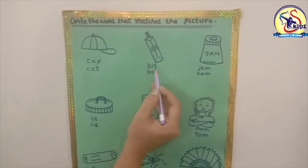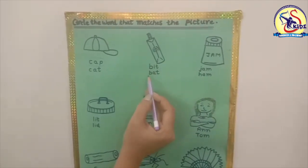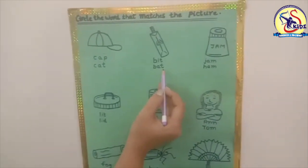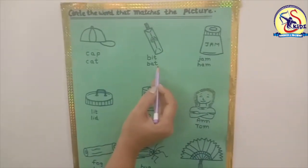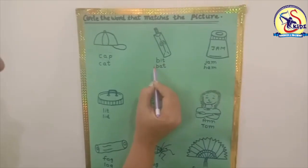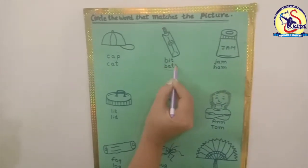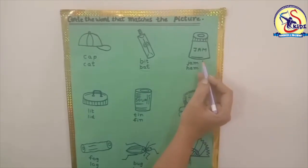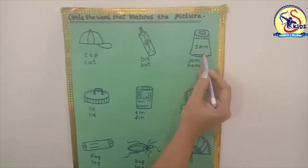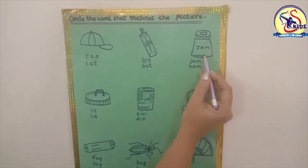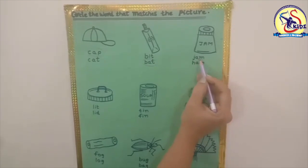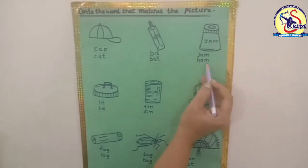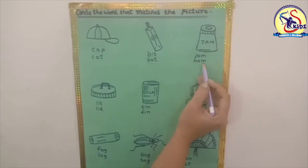Our next picture — this is a bat. B-I-T, bit, or B-A-T, bat. Which is the correct word? Yes, bat is the correct word, so we have to circle this word.